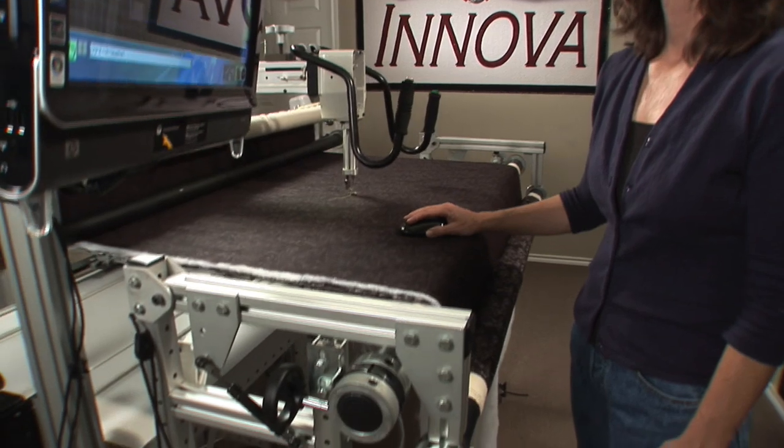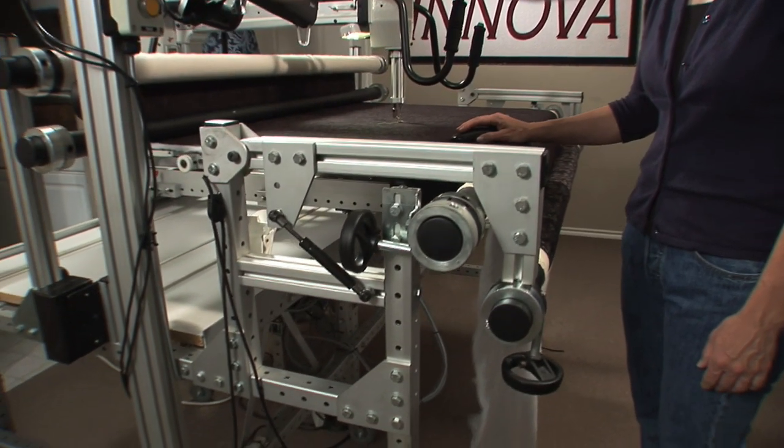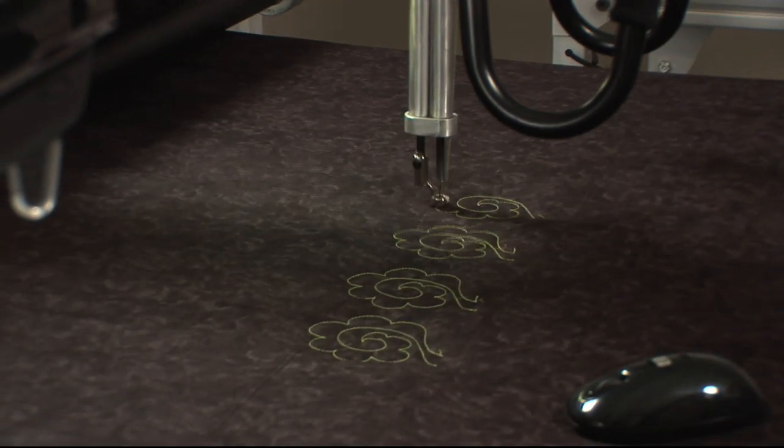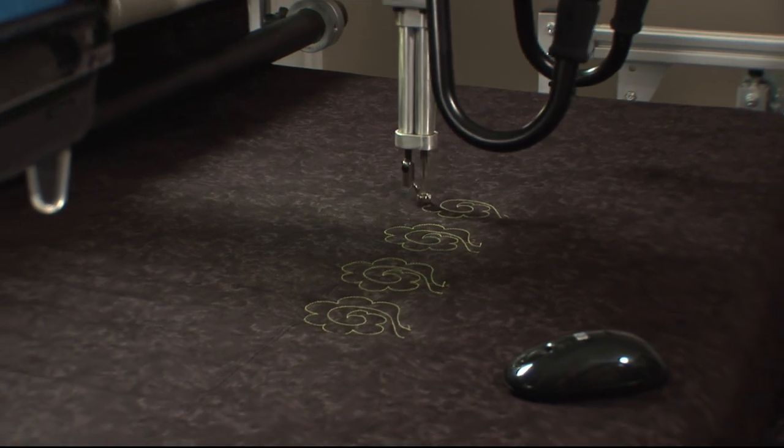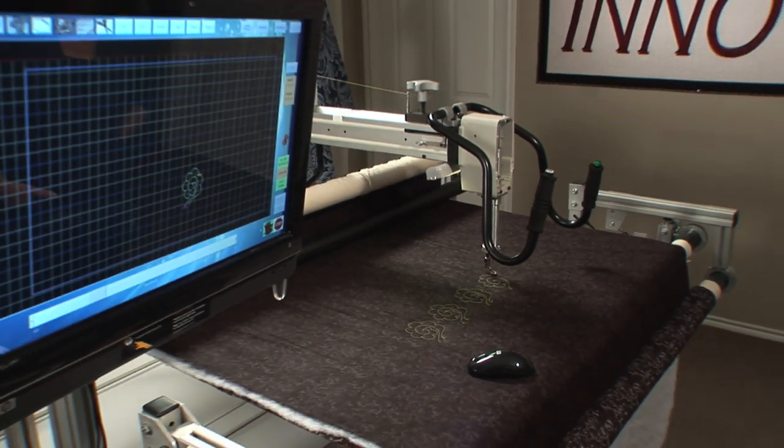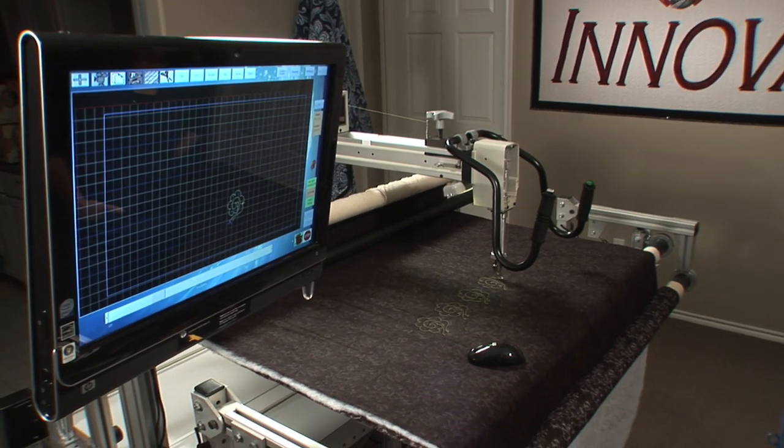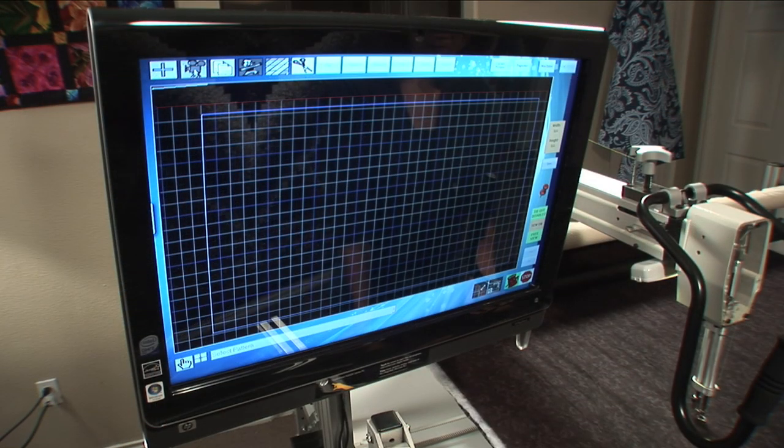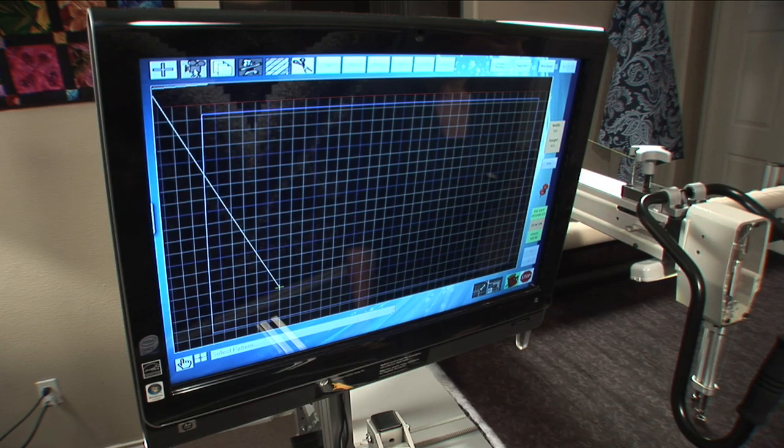The Innova Long Arm Quilting Machine and its companion Innova Pro Frame now have the option to be completely computer controlled. Innova's autopilot is driven by a state-of-the-art Hewlett Packard TouchSmart all-in-one PC with a touch-enabled widescreen LCD monitor.